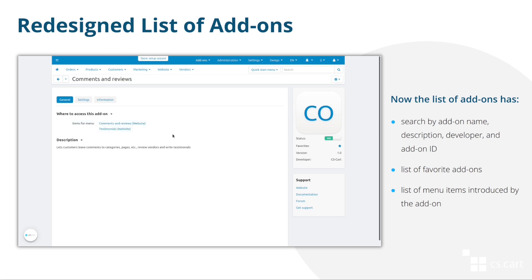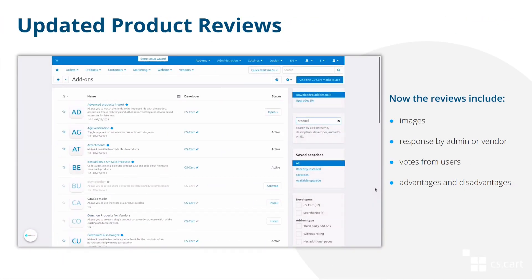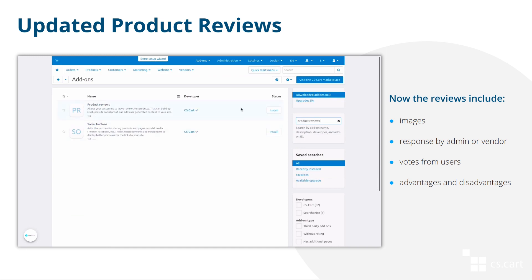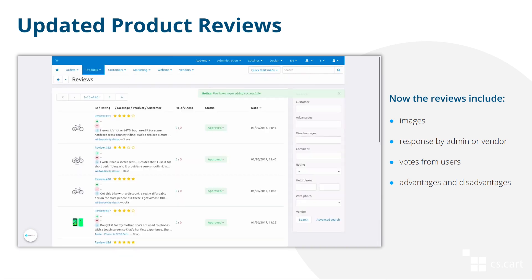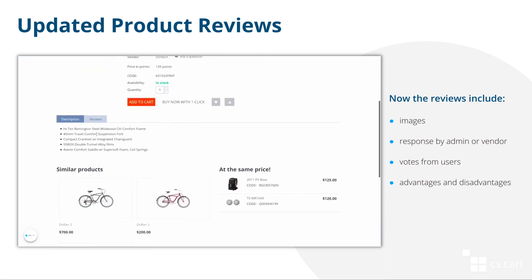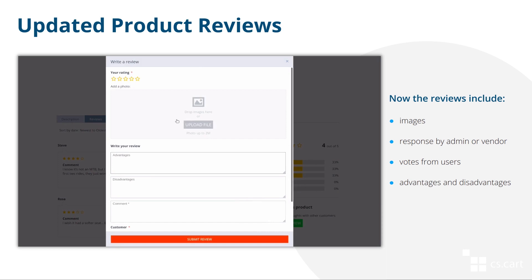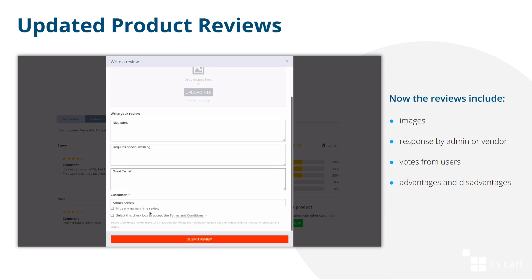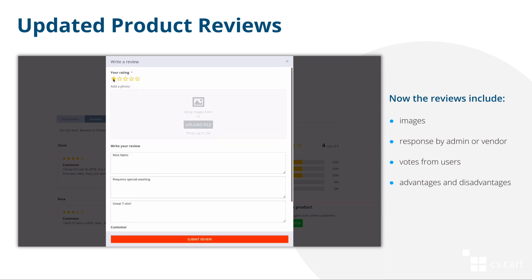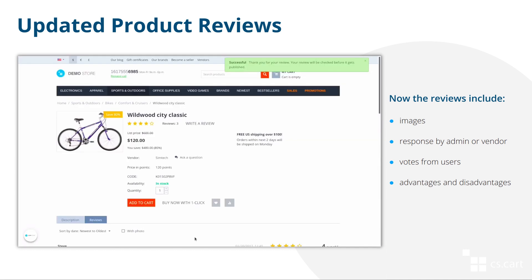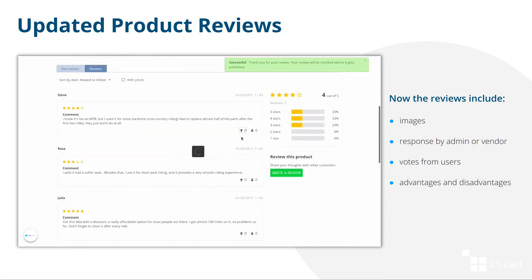The next important feature is updated product reviews. Previously, the Comments and Reviews add-on handled all the reviews in the marketplace. Starting with version 4.13.1, we have an add-on specifically for product reviews. You can import all your existing product reviews to the new add-on. Now customers can describe product advantages and disadvantages, add images, and vote for the most useful reviews. Administrators and vendors can comment on reviews, and those comments will appear for others to see.